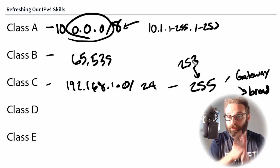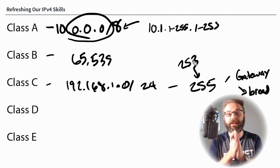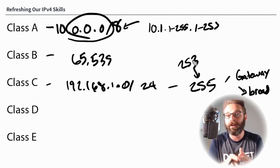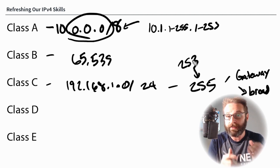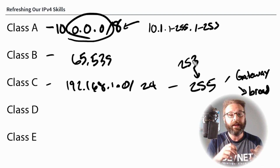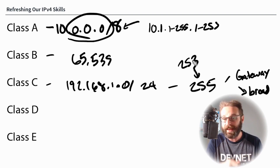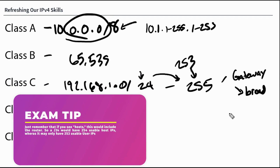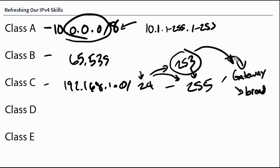This is absolutely critical for you to keep in mind when designing your network: you have to factor in the broadcast address as well as possibly an address for the gateway. When you see a slash 24, your head shouldn't go to 255 available addresses — it should go to 253 available addresses if you're factoring the gateway in. You can only have 253 computers on this network if you want them to be able to communicate to a gateway.